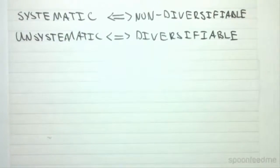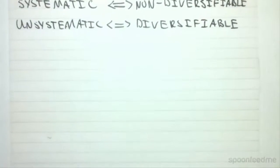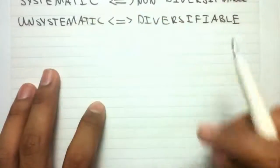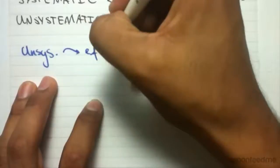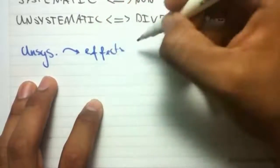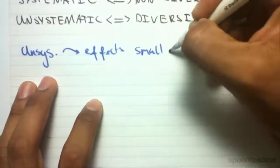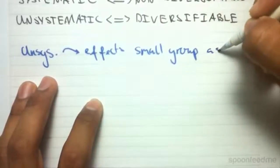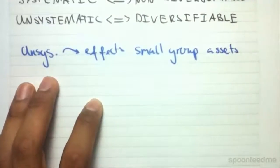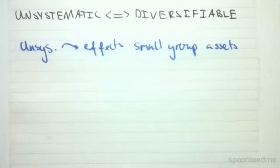By definition, unsystematic risk affects a small group of assets. It's risk which is subjected just to a company, and furthermore to a small group of assets.